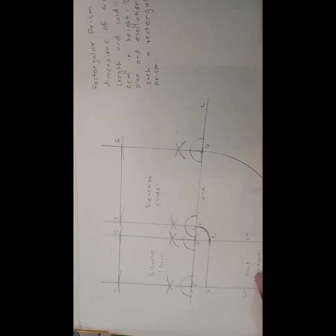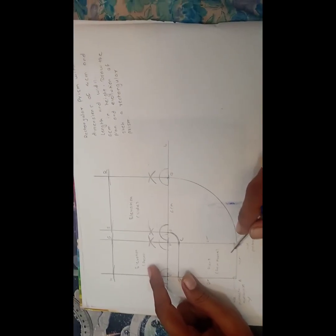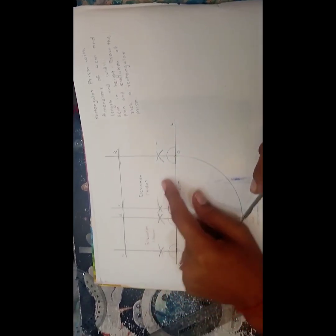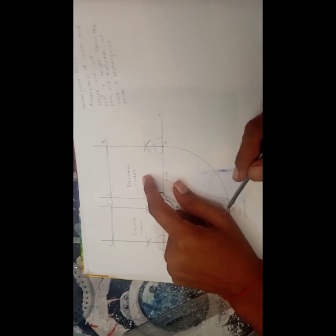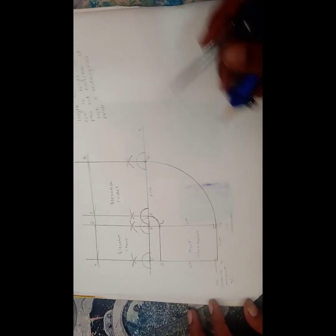So whatever we have already drawn, that is called as the plane from the given question. From this is the front elevation. And this is called as the side elevation. So give the name as per the question.